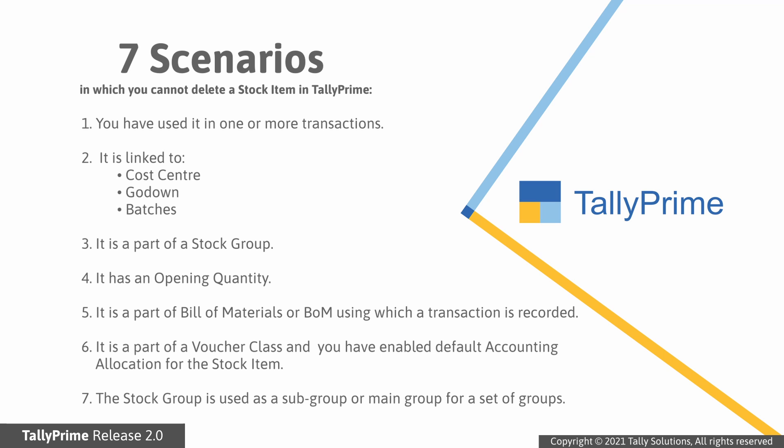6. The stock item is configured in a voucher class by enabling default accounting allocation for stock item. 7. The stock group is used as a subgroup or main group for a set of groups.